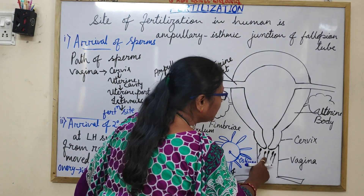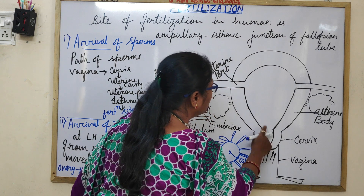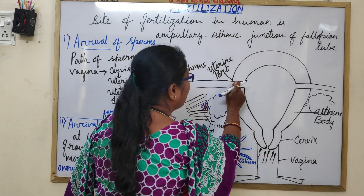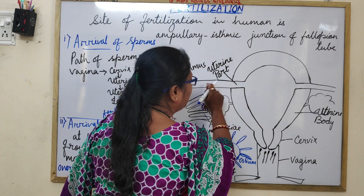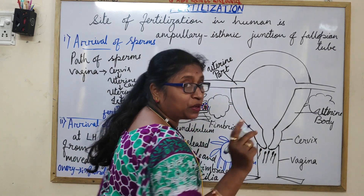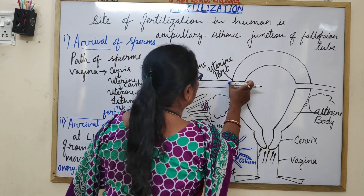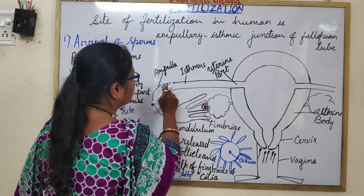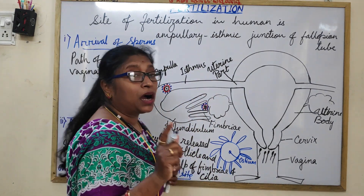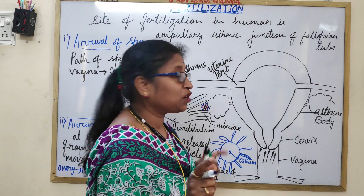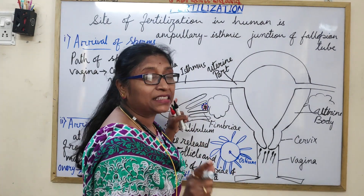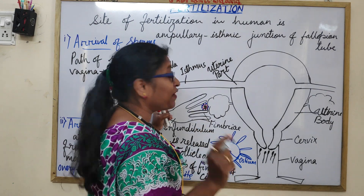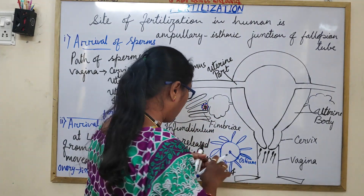After deposition in the vagina, the sperms move through the cervix, then through the uterine cavity, then enter the fallopian tube — the uterine part, then the isthmus — and have to reach the ampullary-isthmic junction where the secondary oocyte is awaiting the sperm.